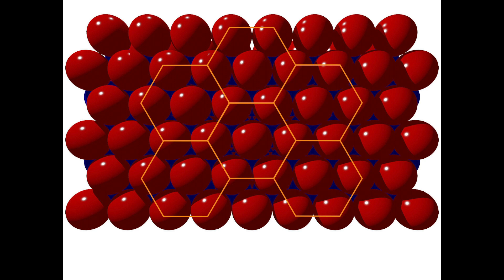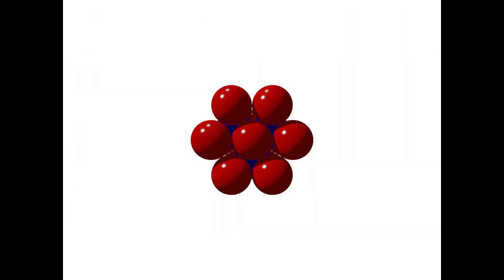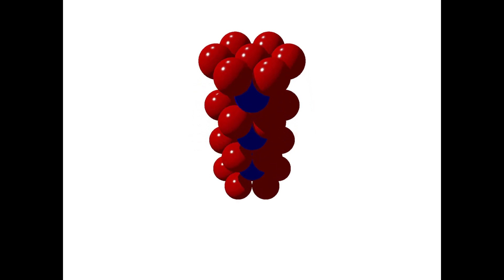To better understand a hexagonal close pack structure, I'm going to remove some of the spheres and isolate a single hexagon. Cutting through all the layers in this way, we can see a hexagonal column has been excised from the structure.